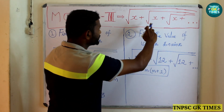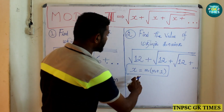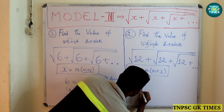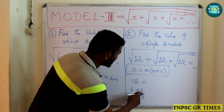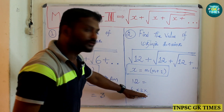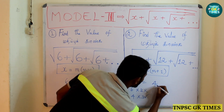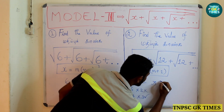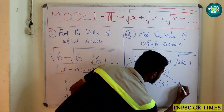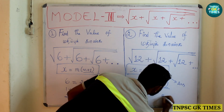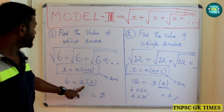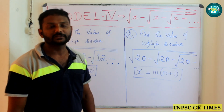Now let's try with x = 12. We need two consecutive terms whose product is 12. 3 × 4 = 12, so m = 3 and m + 1 = 4. For the addition model, the answer is m + 1, the biggest term. Therefore, m + 1 = 4, and 4 is the answer.